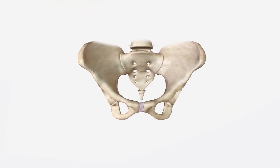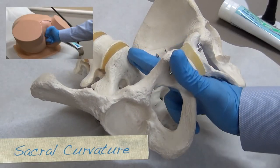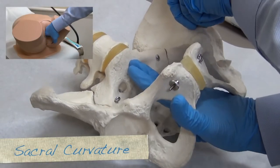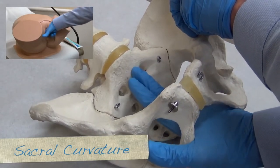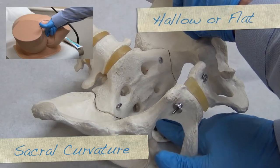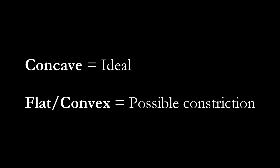Continue the assessment of the pelvic mid-plane starting with the curvature of the sacrum. Move your fingers down from the sacral promontory to the tip of the sacrum and check whether the curvature is concave, flat, or convex. A concave sacrum is ideal, whereas a flat or convex sacrum might indicate anteroposterior constriction in the mid-plane.